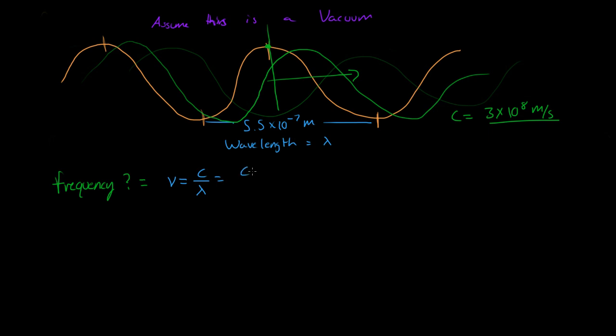So what is that? That's 3 times 10 to the 8th meters per second divided by 5.5 times 10 to the negative 7th. Alright, so let's plug that into a calculator.